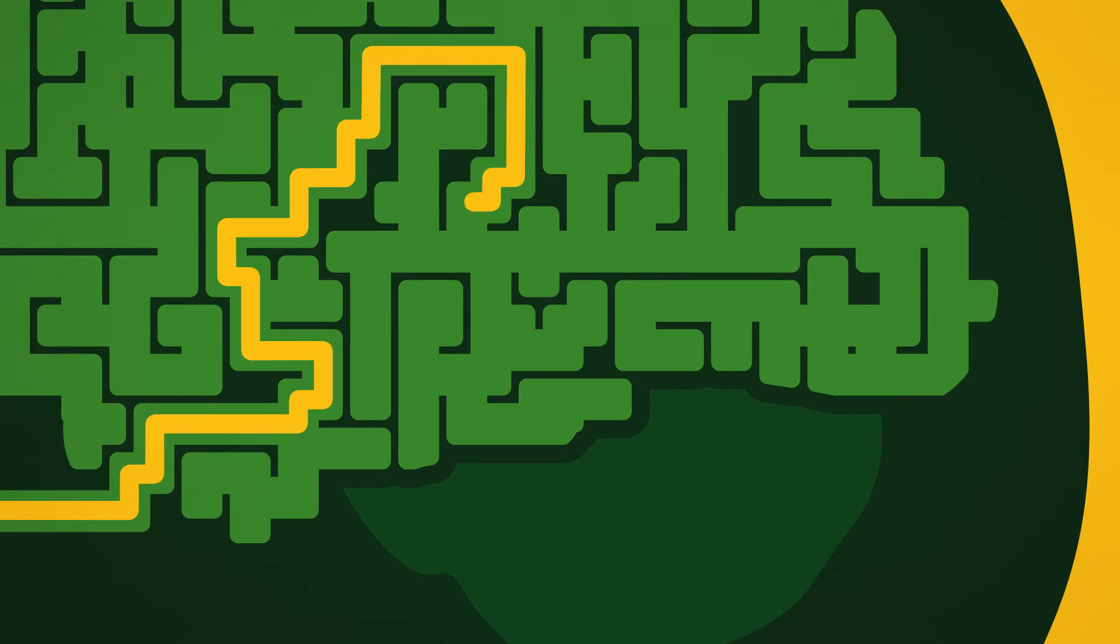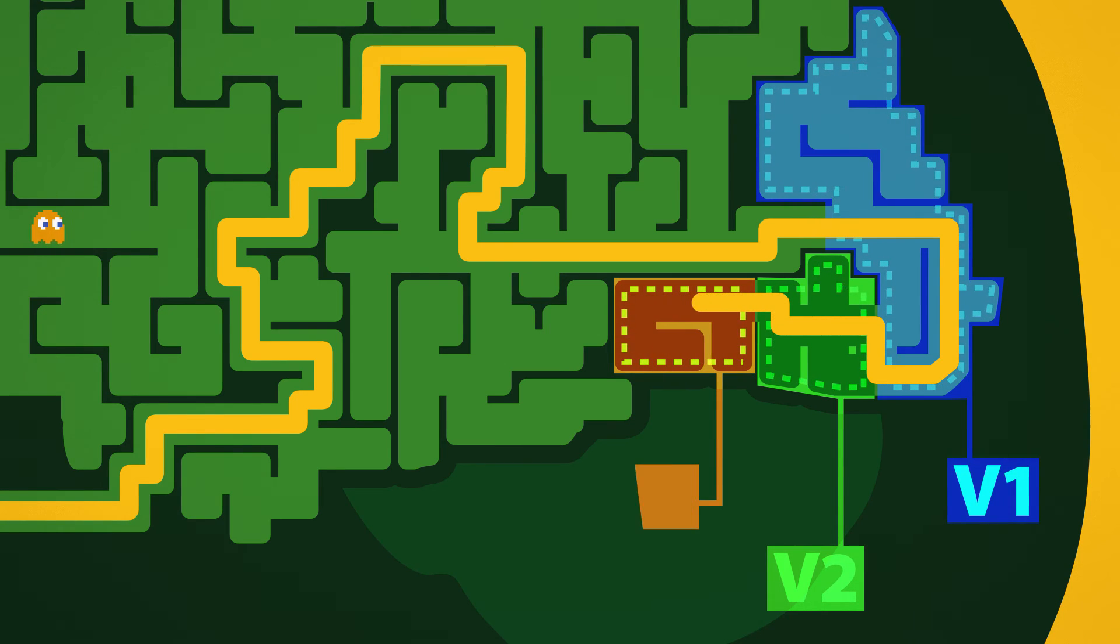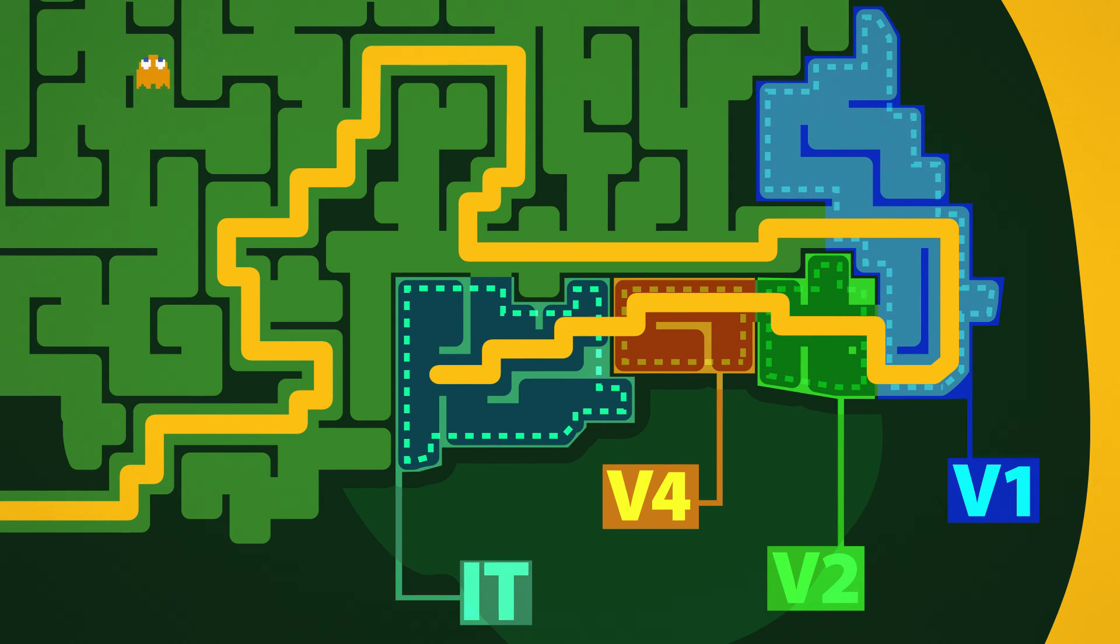So the signals from the eye travel to the visual areas at the back of the brain, exciting neurons in the first visual area, V1. From V1, they pass through V2, then V4, then onwards to the inferior temporal cortex where objects are recognized.